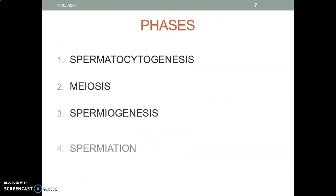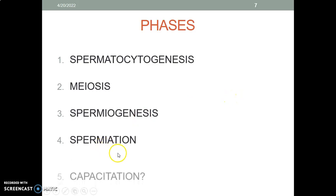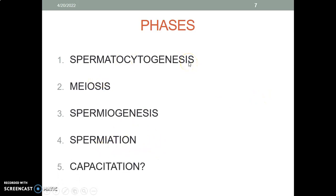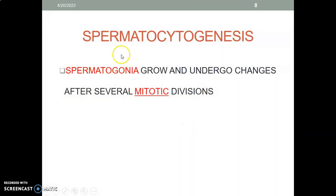The seminiferous tubules have cells of the spermatogenic series as well as Sertoli cells, which support the sperm cells. Spermatogenesis contains five phases: spermatocytogenesis, meiosis, spermiogenesis, spermiation, and capacitation.